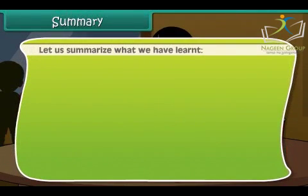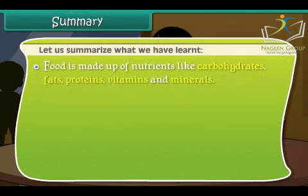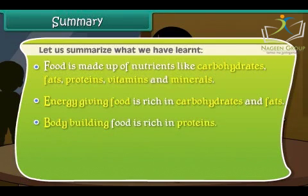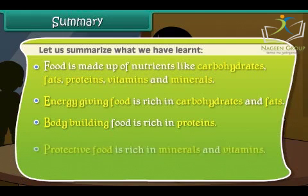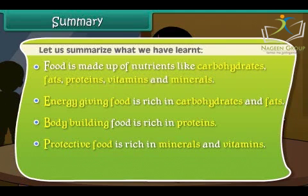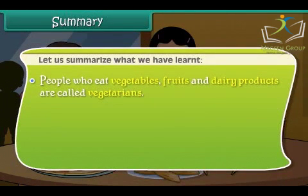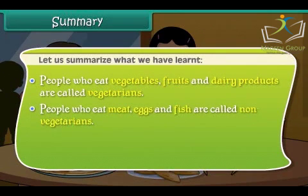Food is made up of nutrients like carbohydrates, fats, proteins, vitamins and minerals. Energy giving food is rich in carbohydrates and fats. Body building food is rich in proteins. Protective food is rich in minerals and vitamins. Plants make their food in their leaves. People who eat vegetables, fruits and dairy products are called vegetarians. People who eat meat, eggs and fish are called non-vegetarians. We should follow good food habits to stay fit and healthy.